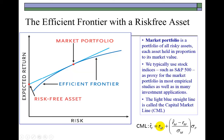This model tells us that the expected return on an efficient portfolio — one lying on the efficient frontier — is equal to the risk-free interest rate, plus the risk premium of the portfolio, consisting of the market risk premium expressed as a percentage of the standard deviation of the market, multiplied by the standard deviation of the portfolio.